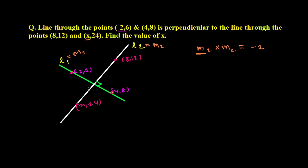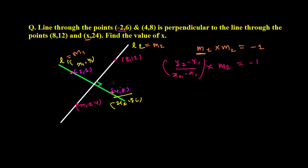The slope of the first line we can easily find because we have the two points. Whenever we get two points, we can find the slope using (y2 - y1) / (x2 - x1). Taking (4, 8) as (x2, y2) and (-2, 6) as (x1, y1), slope m1 = (8 - 6) / (4 - (-2)) = 2 / 6.